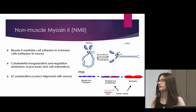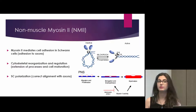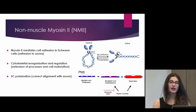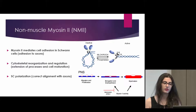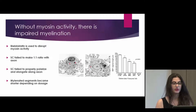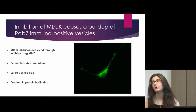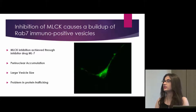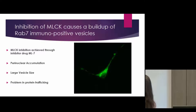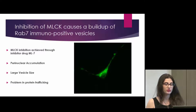Non-muscle myosin-2 is also activated by two different kinases called MLCK and ROCK. They convert the inactive phase into the active phase and cause non-muscle myosin-2 to become active. When we inhibit one of those activators, MLCK, we find that there's a large accumulation of RAB7-positive vesicles in the perinuclear region. We can see that these vesicles are enlarged, which indicates a problem in protein trafficking.